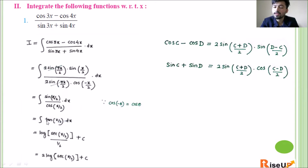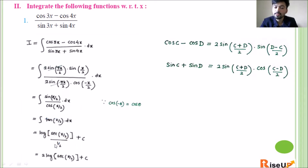Now we take the integration of tan(x/2). We know that integration of tan x is log|sec x|. Here we have x/2, so the integration gives log|sec(x/2)|. But x/2 has derivative 1/2, so we divide by 1/2, which means we multiply by 2. So the final answer is 2 log|sec(x/2)| + c. This is our first answer.